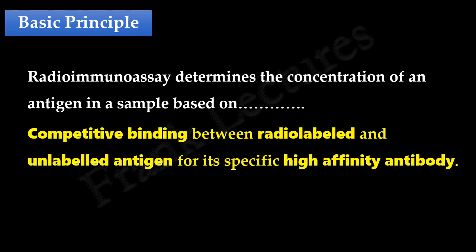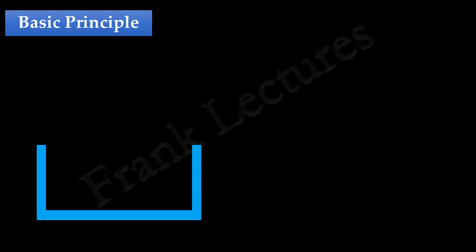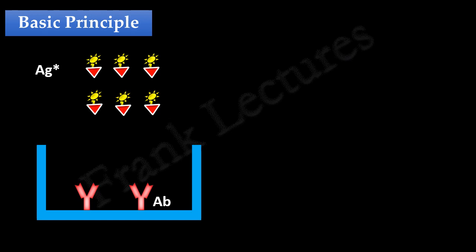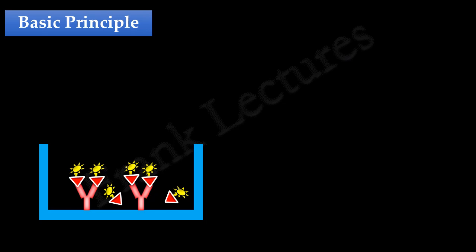Suppose this is a microtiter well. A fixed or constant amount of antibodies specific to our test antigen is immobilized in this well — say, two antibodies. Next, we add specific radiolabeled antigens to this well, and the amount of these antigens is such that they saturate all the antigen binding sites present in the well. This well is rinsed to remove the unbound radiolabeled antigens. At this point, if we measure the radioactivity of the well, it will be maximum — say, 100%.